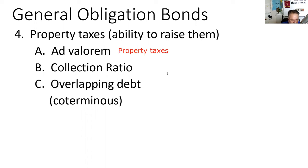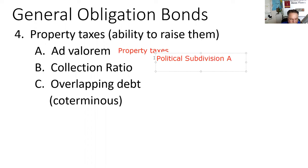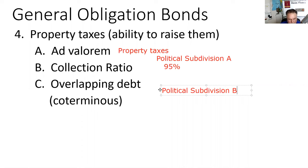If political subdivision A has a 95% collection ratio, only 5% of property taxes are delinquent. Political subdivision B has a 70% collection ratio, meaning 30% of taxes are delinquent. All things being equal — which they never are except on an exam — political subdivision A has better ability and willingness to pay back borrowed funds because they have a higher collection ratio.